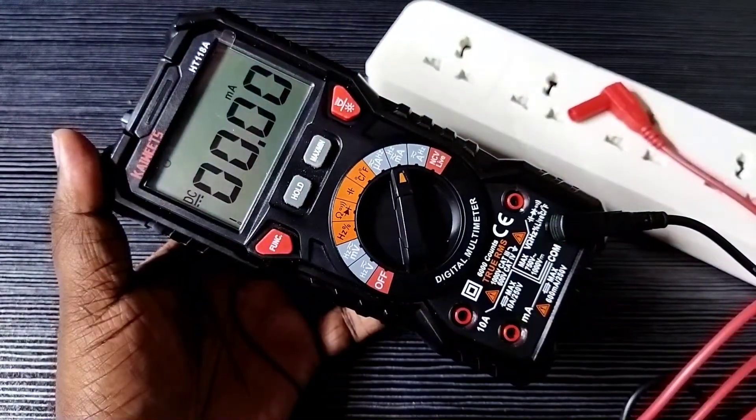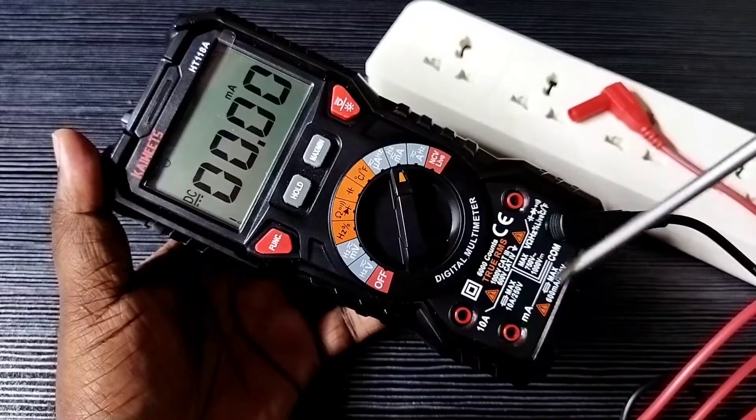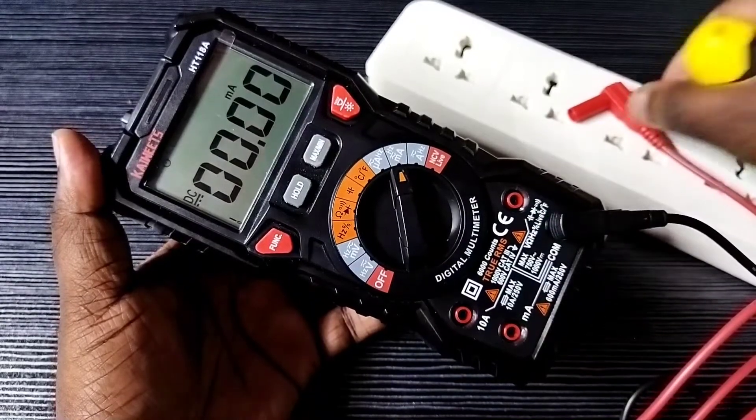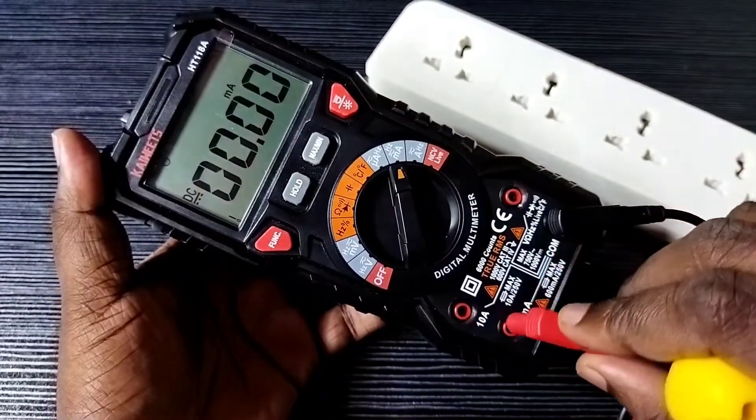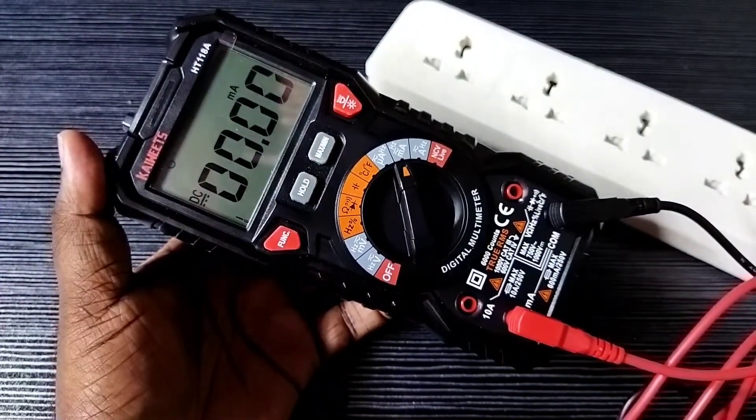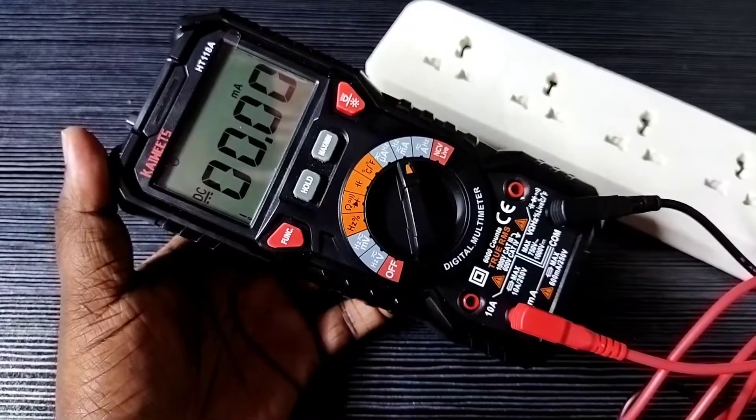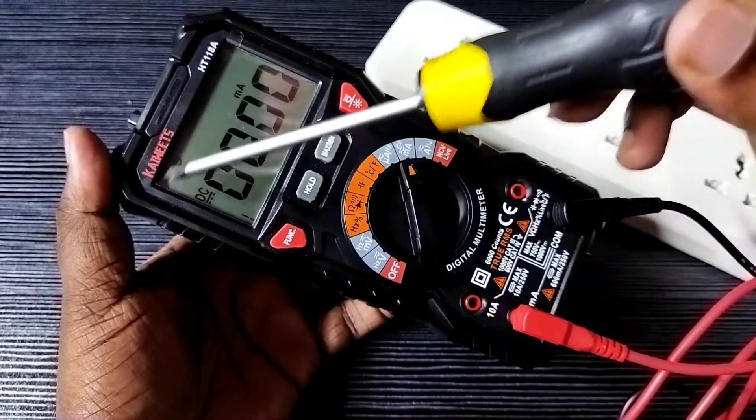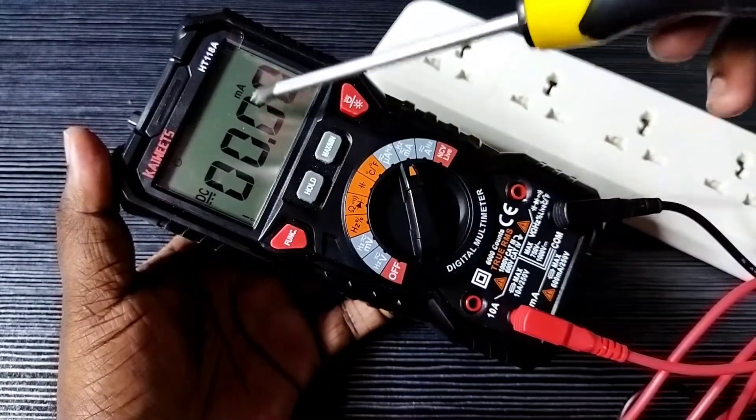Connect the test cables - red cable to the microampere port and black cable to the COM port. Then in the LCD screen you can see DC. That means right now we can measure DC current in microamperes.